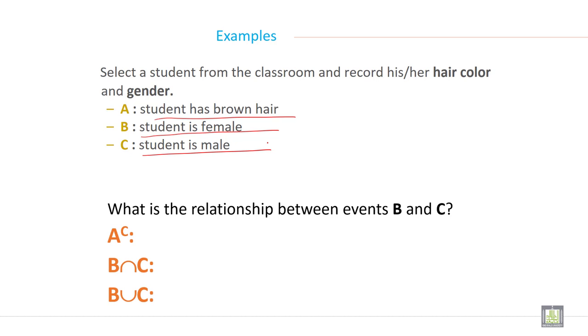What is the relationship between event B and C? A complement, B intersection C, and B union C.